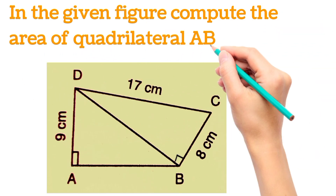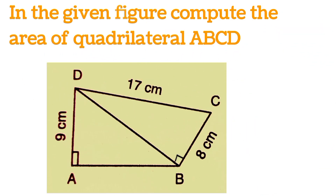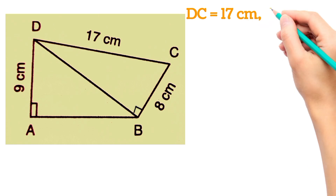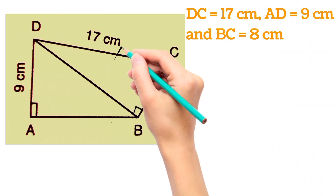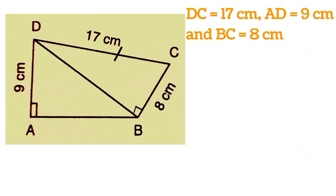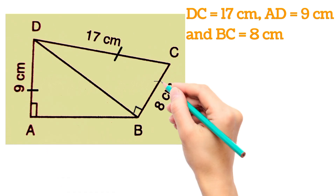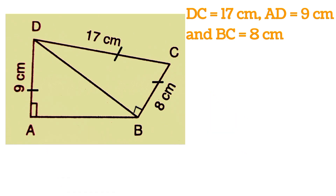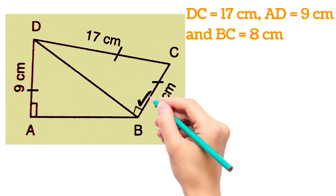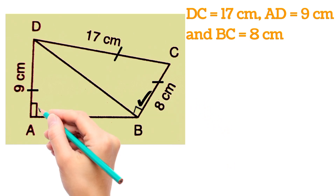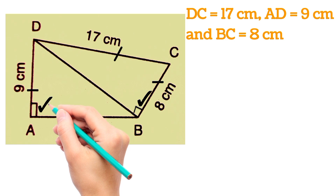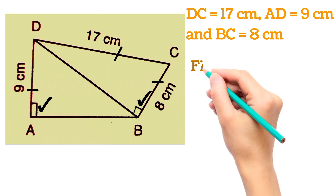Hello everyone, welcome back. Today we have to find the area of quadrilateral ABCD. From the given figure: DC is 17 cm, AD is 9 cm, BC is 8 cm, angle DBC is 90 degrees, and angle DAB is also 90 degrees.